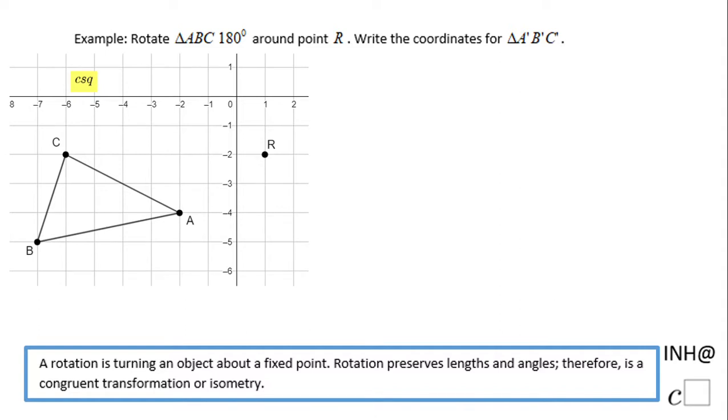Welcome to I Need Help C Squared. In this example we're going to rotate triangle ABC 180 degrees counterclockwise around point R. Since it's counterclockwise, common sense tells us that we should probably be somewhere here, because 180 degrees would be on the opposite side of this point.